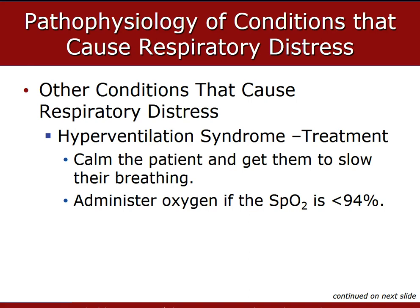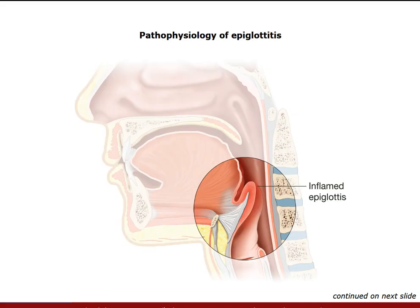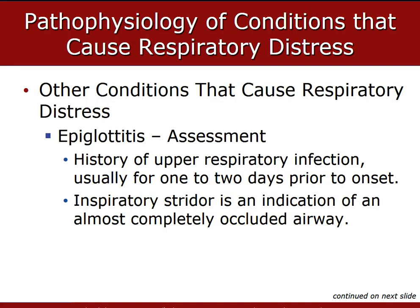The most common cause of epiglottitis in the adult population is Haemophilus influenzae type B. In epiglottitis, the epiglottis and the area around the base of the tongue become severely infected. As the condition progresses, the epiglottis and surrounding structures become inflamed and swollen, leading to a compromised airway and respiratory compromise.